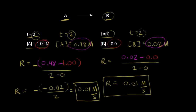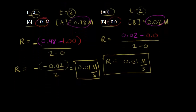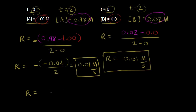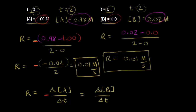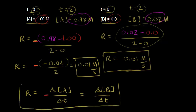So we calculate the average rate of reaction using the disappearance of A and the formation of B. More generally, the rate equals the negative change in the concentration of A over the change in time — the negative sign ensures a positive value — and that equals the change in the concentration of B over the change in time, where no negative sign is needed because the product concentration is increasing.